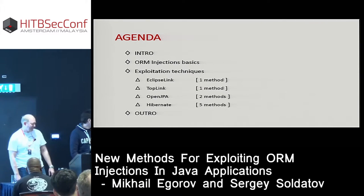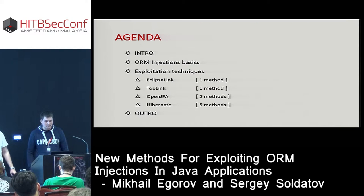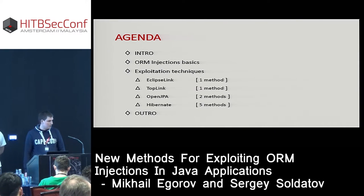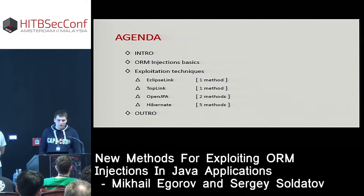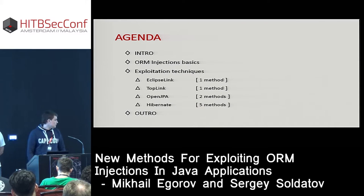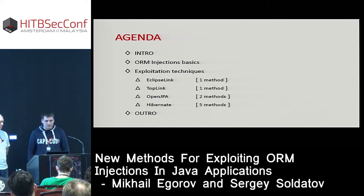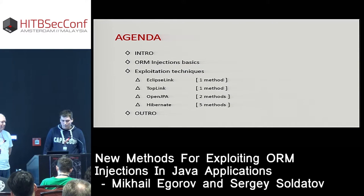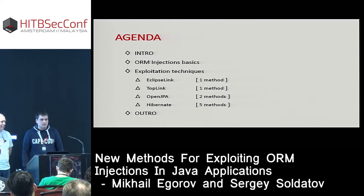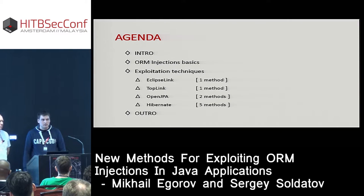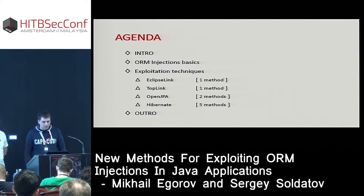Our talk consists of four main parts. It has an introduction where we'll briefly talk about what ORM is. The next part covers ORM injection vulnerability basics. The majority of slides are devoted to exploitation techniques we uncovered in different ORM libraries. In the last part we'll summarize our techniques in table form. Last year at the Zero Nights conference in Russia we presented some exploitation techniques for Hibernate ORM, and in this talk we'll present new methods for exploiting ORM injections in Hibernate and also cover other ORM libraries used in Java.